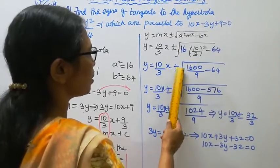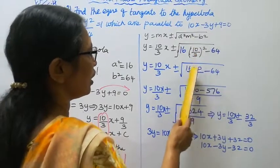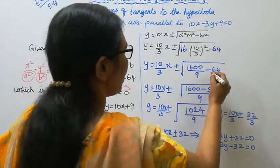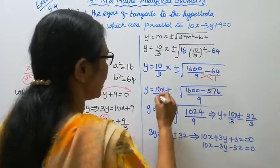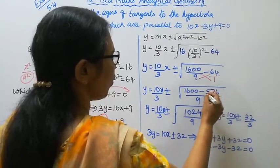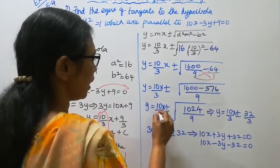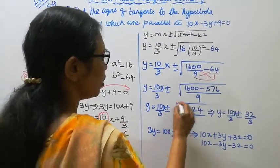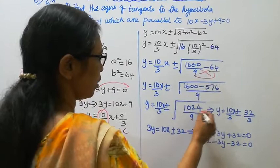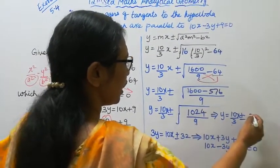y equal to 10 by 3 x plus or minus root of 16 into (10 by 3)² minus 64. That gives 16 into 100 by 9 minus 64, which is 1600 by 9 minus 576 by 9, equal to root of 1024 by 9. The square root of 1024 is 32, and root of 9 is 3. So we get y equal to 10x by 3 plus or minus 32 by 3.